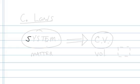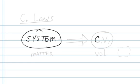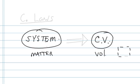Two fundamental ideas: a system, and a control volume, or CV. A system is a collection of matter identified by the engineer — so this is matter. A control volume is a volume in space defined by the engineer, typically shown with a dotted line around some object.